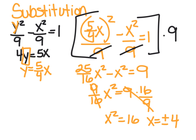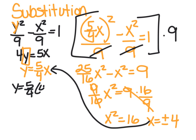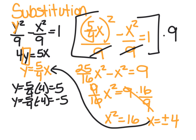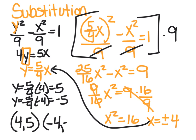So now that we have our two x values, we go back and plug each of them in. We've got y equals 5 fourths of positive 4, which gives us 5. And y equals 5 fourths times negative 4, which is negative 5. And then you write your answer as two ordered pairs: the first one is positive 4, positive 5, and the second one is negative 4, negative 5.